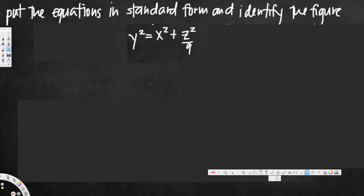In this video we are going to see how to identify and draw the quadric surface of the given function. Here we have y² = x² + z²/9. First of all, before we do this problem, we have to know the standard forms.